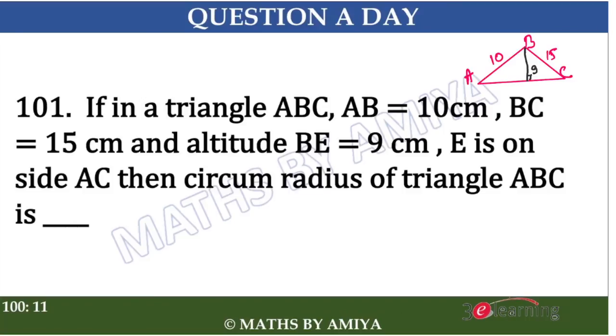E is on side AC, and we have to find the circumradius in which the missing part is X. So if we think and try to solve this question, at first glance this seems to be one of the calculated questions. We need to find X, then the circumradius and all. But if you know the formula of the circumradius, you can solve the question very easily.